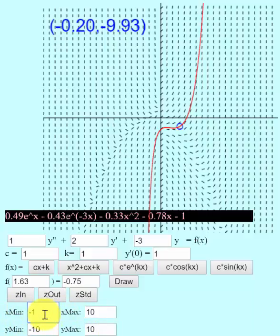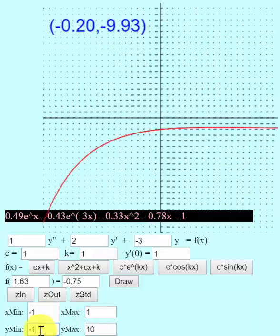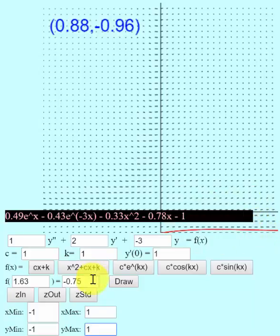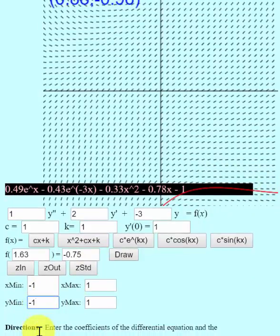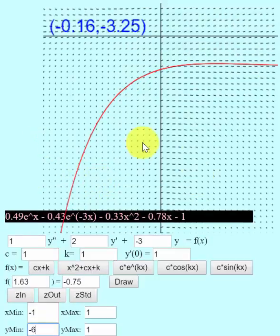So if I want, say, negative 1 to 1 for x and negative 1 to 1 for y, there it is. That may not be too interesting because it's way below. So maybe I'll go y min, how about negative 6.